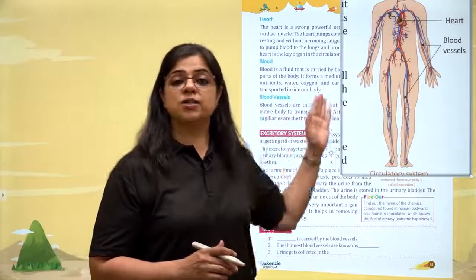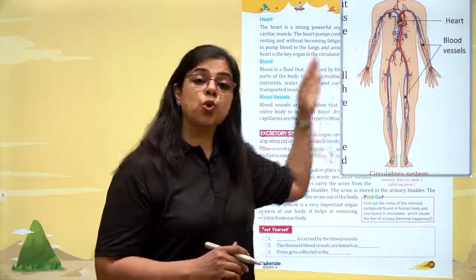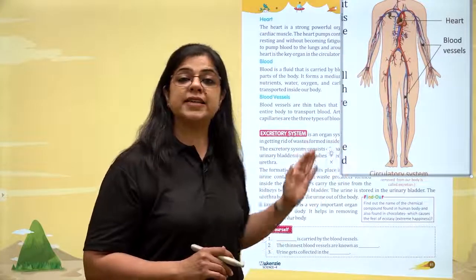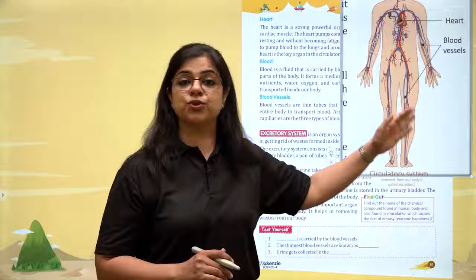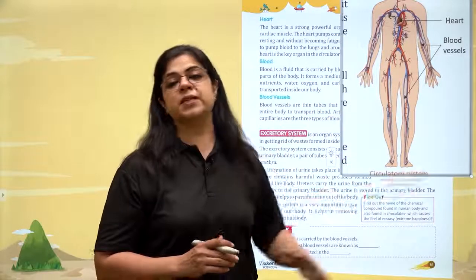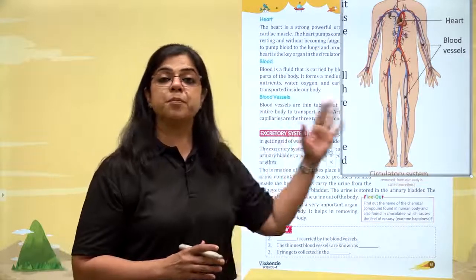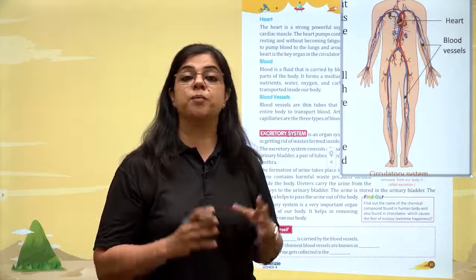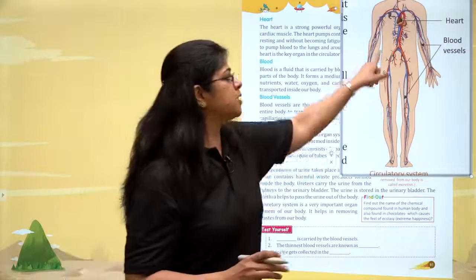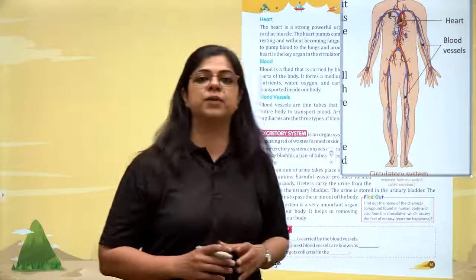This blood is a fluid that is carried all through the body. Lungs se oxygen lejaana, lungs ko carbon dioxide deena, small intestine se digested nutrients lejaana, aur body se waste material carry karna — yeh sab kaam blood ka hai. Aur blood kaise transport hota hai? Blood transport hota hai through these blood vessels.